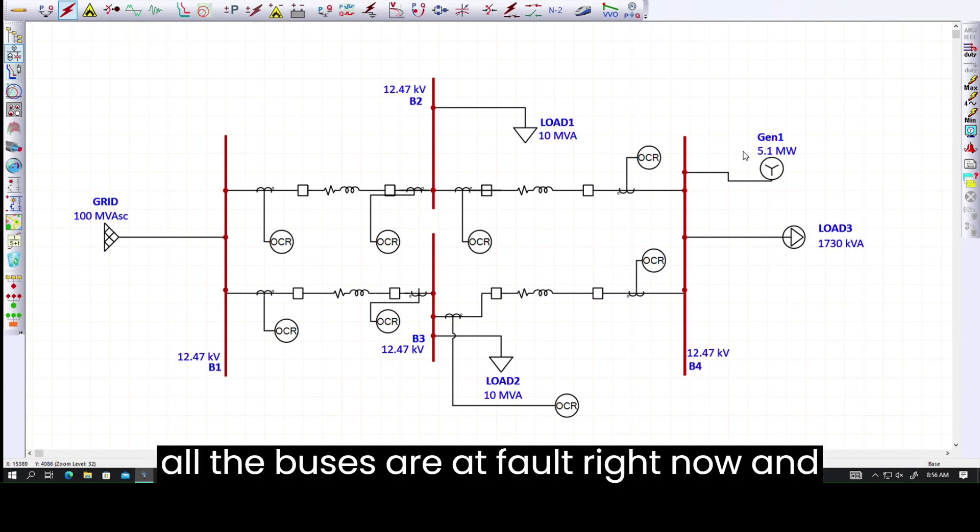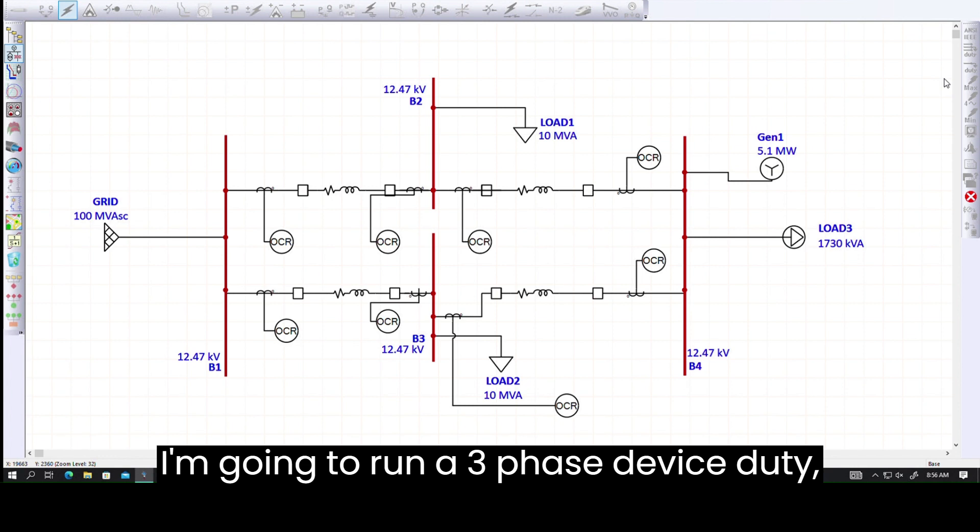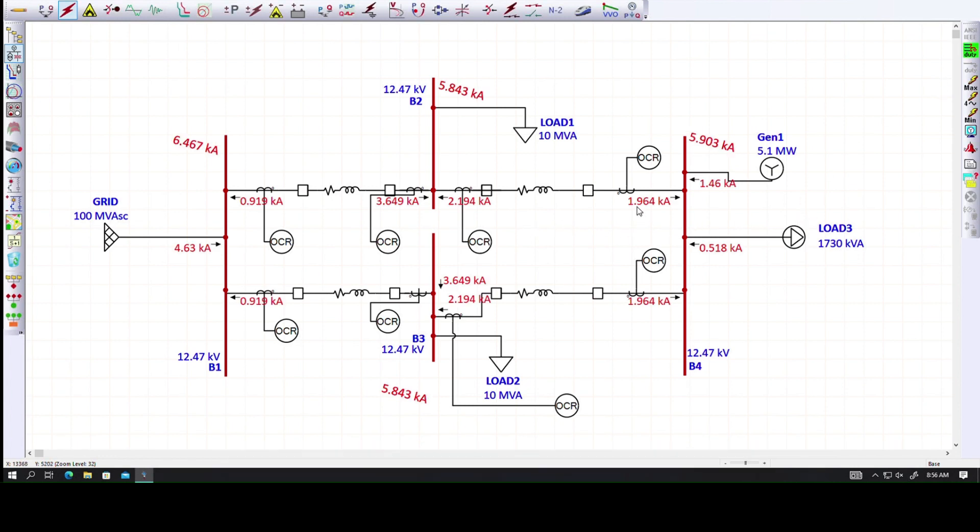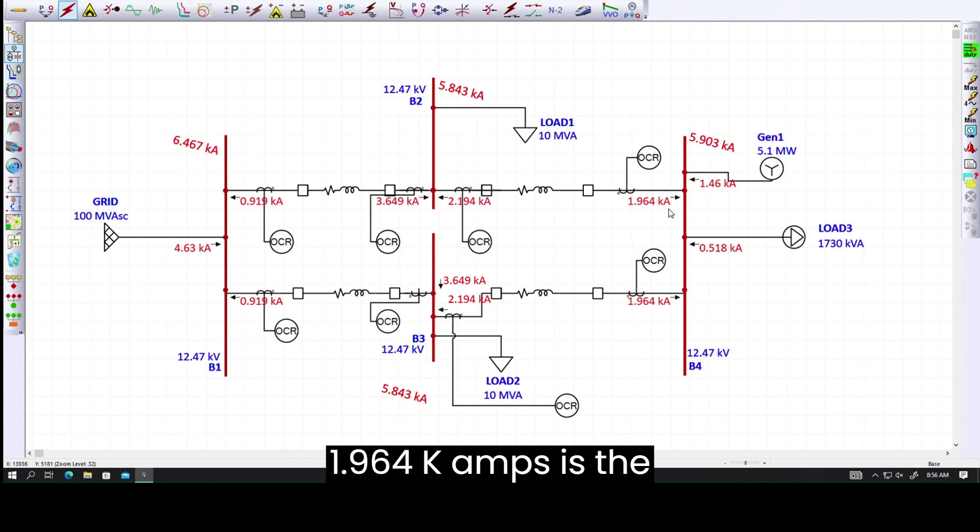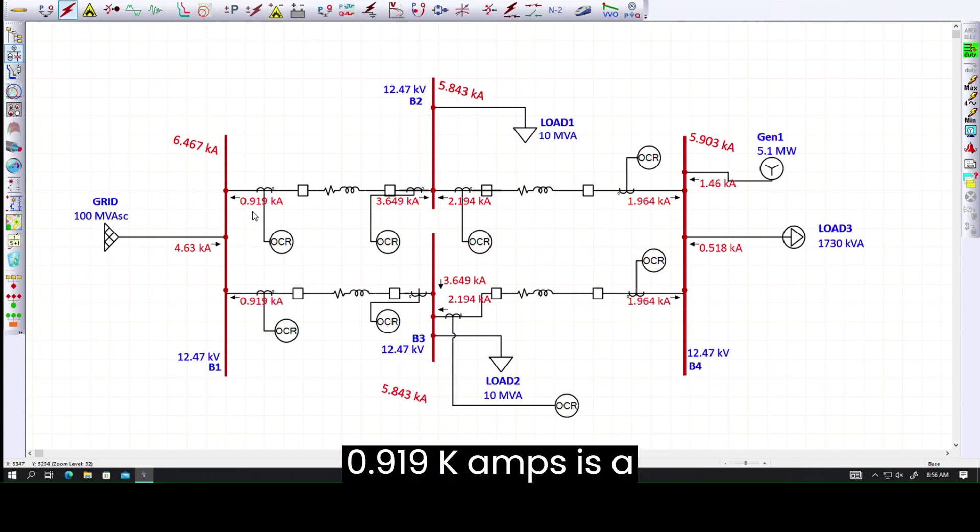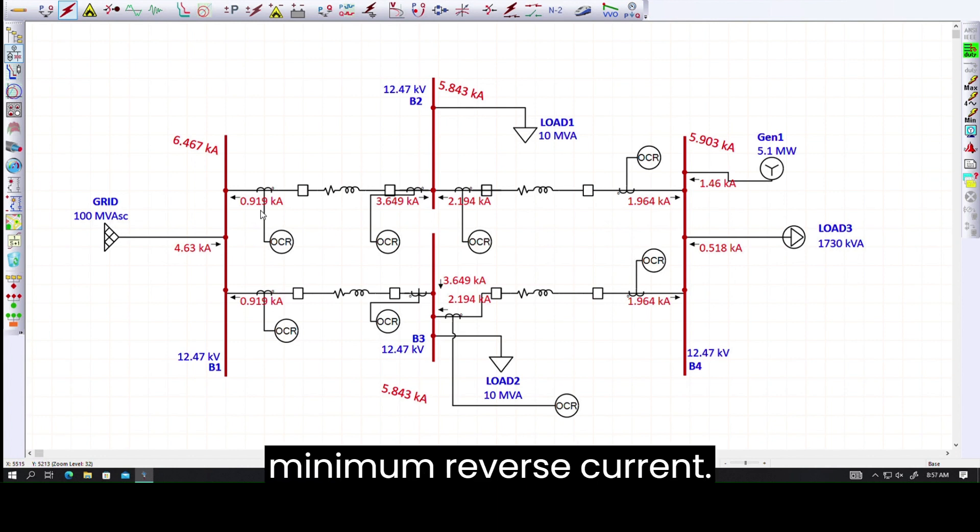Now all the buses are at fault right now and I'm going to run a three-phase device duty. Here we figured that 1.964 kA is the minimum forward fault current and 0.919 kA is the minimum reverse current.